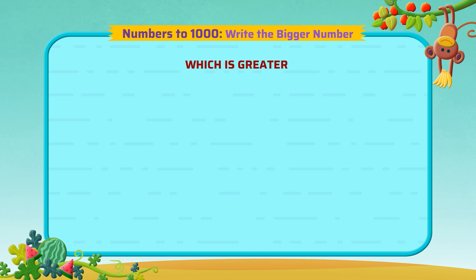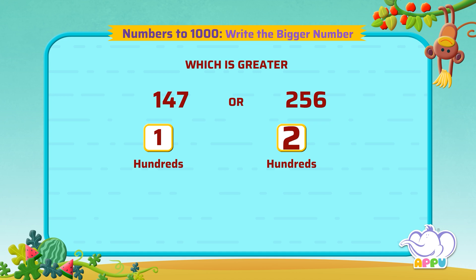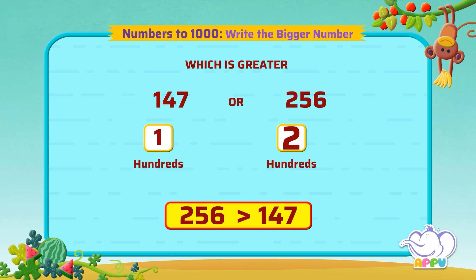Which is greater? 147 or 256? We first compare the numbers in the hundreds place. Here we compare 1 and 2. Since 2 is greater than 1, 256 is greater than 147.